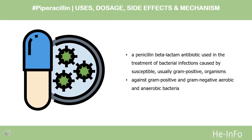Pharmacodynamics. Piperacillin is a penicillin beta-lactam antibiotic used in the treatment of bacterial infections caused by susceptible, usually gram-positive, organisms. The name penicillin can refer to several variants of penicillin available, or to the group of antibiotics derived from the penicillins. Piperacillin has in vitro activity against gram-positive and gram-negative aerobic and anaerobic bacteria.